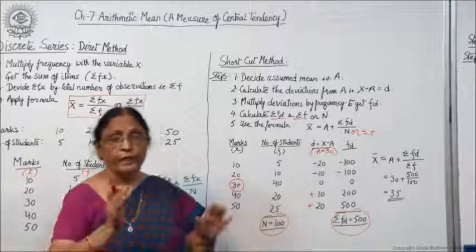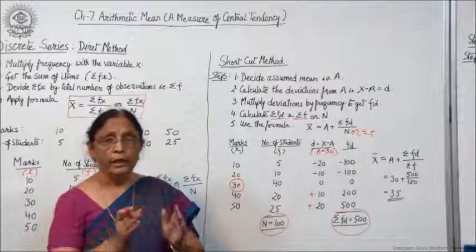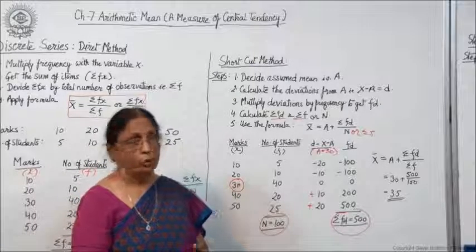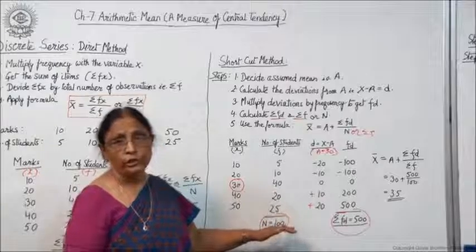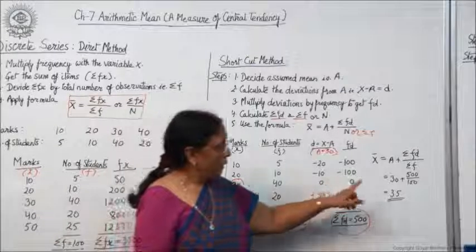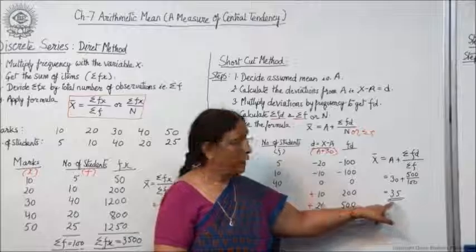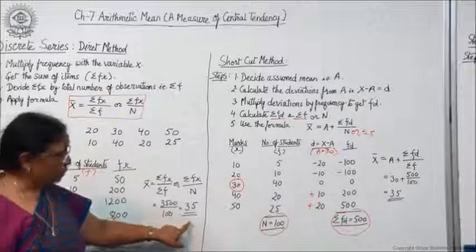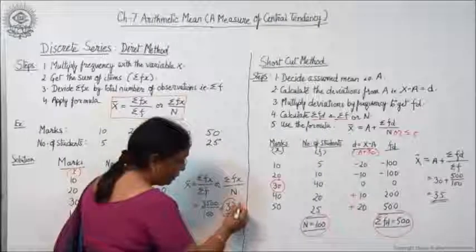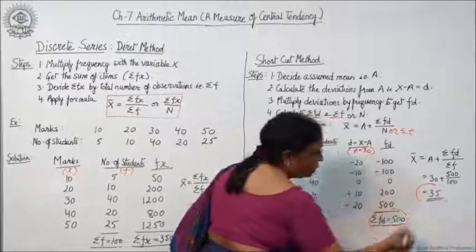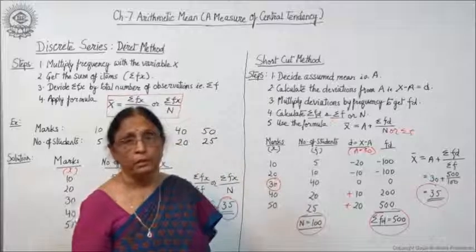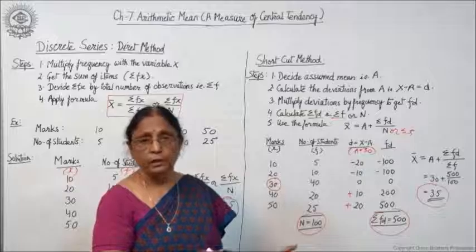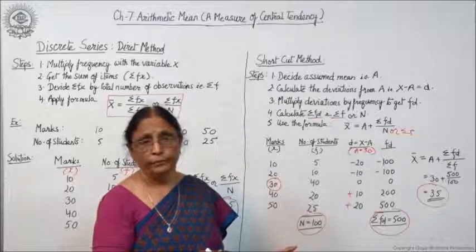As I told you, first write down the formula clearly and after writing it down, put in the values looking at the calculations you have done. The answer is 35. And when we calculated the same data with the direct method, the answer was also 35. So both ways — whether shortcut method or direct method — the answer is the same.